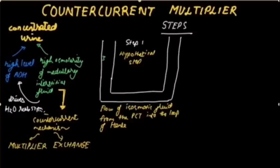The solute concentration in the descending thin limb is 300 milliosmoles per litre, and in the medullary interstitium it is also 300 milliosmoles per litre.